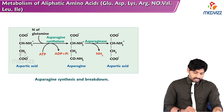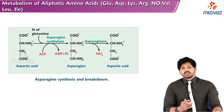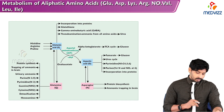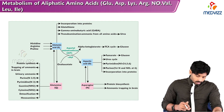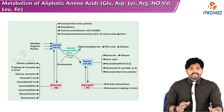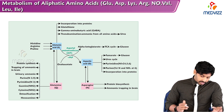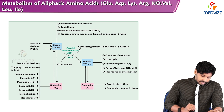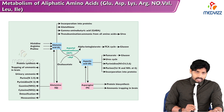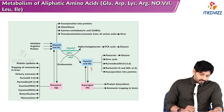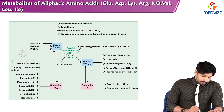In the asparagine synthesis reaction (similar to glutamine synthetase), ATP is required. The amide nitrogen of glutamine and aspartic acid are used to convert aspartic acid to asparagine. Asparaginase converts asparagine back to aspartic acid by removing the amino group. This is the overall picture of glutamic acid and aspartic acid and their amide forms.